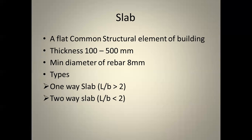There are two types of slab: one-way slab and two-way slab. Since a slab is a 3D component it has length, breadth, and depth. If the length-to-breadth ratio is greater than two, we call it a one-way slab. If the L/B ratio is less than two, we call it a two-way slab.